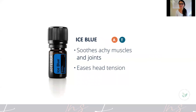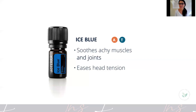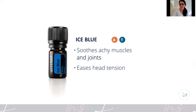Ice Blue is the one that I've replaced my deep heat with. It's great to massage into stiff shoulders, sore lower back, aches and pains in joints. If you have stiff joints you can also use it for head tension, or even for little ones who are waking up during the night complaining of sore legs — you can massage that on.